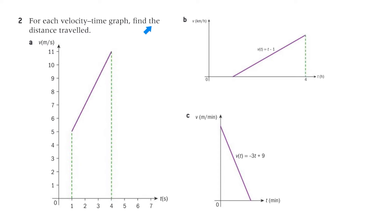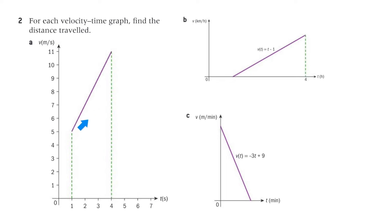Question 2: for each velocity time graph, find the distance travelled. For part A, break it into a rectangle and a triangle. The triangle has a base of 3 and a height of 6 (since 11 minus 5 = 6), giving area 18 divided by 2 = 9. The rectangle has dimensions 3 and 5, giving area 15. Total distance is 15 plus 9 = 24.